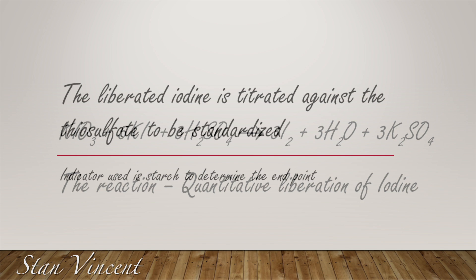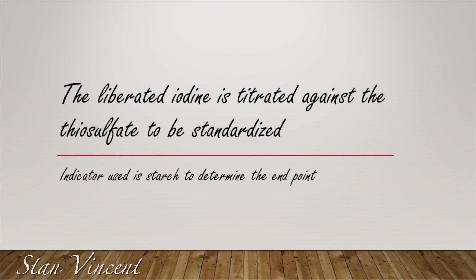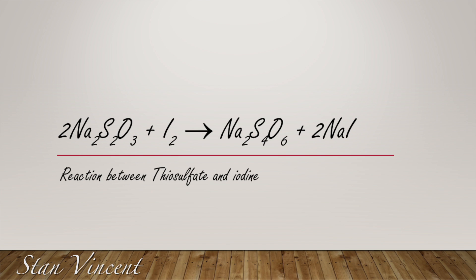The liberated iodine is titrated against sodium thiosulfate, which is to be standardized. We will use starch as an indicator to note the end point of the reaction. The reaction between sodium thiosulfate and iodine can be represented as: two moles of sodium thiosulfate reacts with one mole of iodine to produce sodium tetrathionate and sodium iodide.